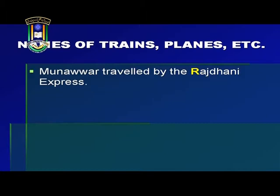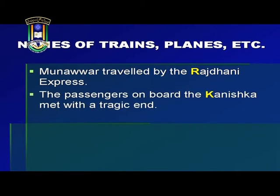Let us now see how capital letters are also used to indicate names of different modes of transport — it could be the name of a train, a plane, a ship or any other mode of transport. Study these examples: Munawar traveled by the Rajdhani Express. The passengers on board the Kanishka met with a tragic end. Rajdhani Express is the name of a train, while Kanishka is the name of a plane. So in each of these sentences, the modes of transport have been capitalized.